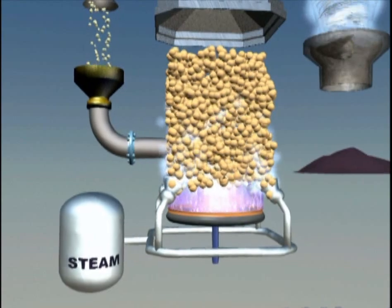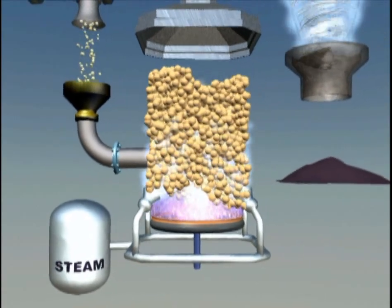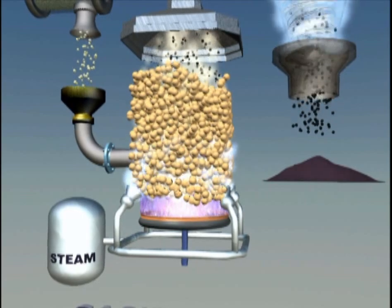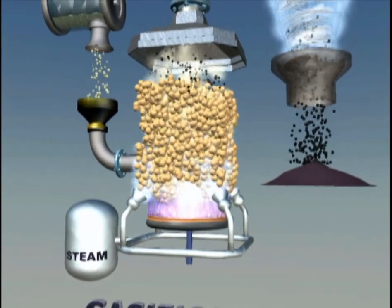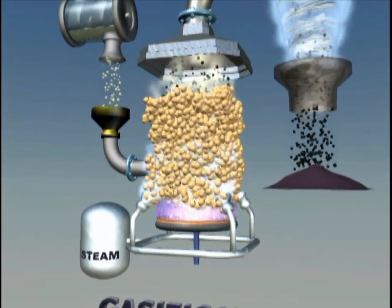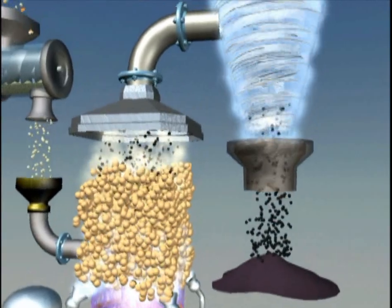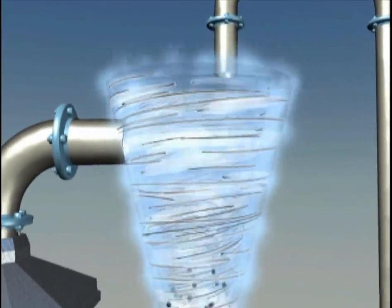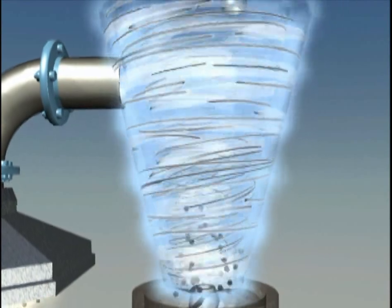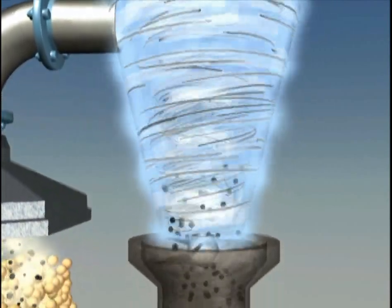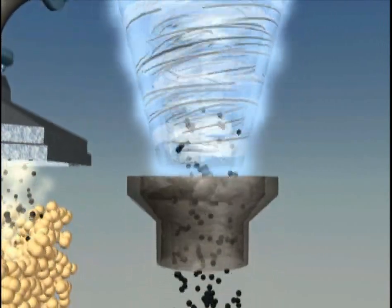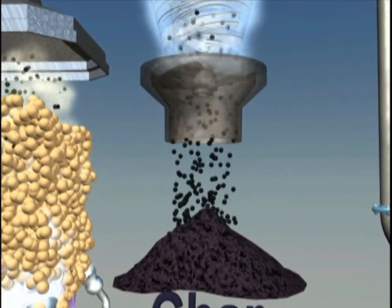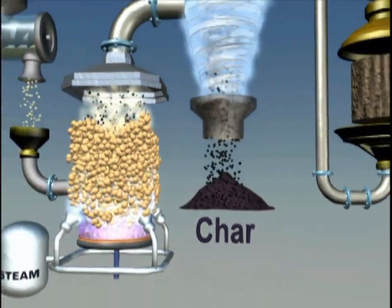In the gasifier, the biomass is broken down into vapors in a carefully controlled environment that typically contains oxygen and/or steam. The syngas produced is made up of carbon monoxide and hydrogen. Char, a solid byproduct of gasification, is typically removed using a cyclone. Cyclonic separation allows removal of particulates from a gas stream without a filter by using rotational effects in combination with gravity to collect the particles.